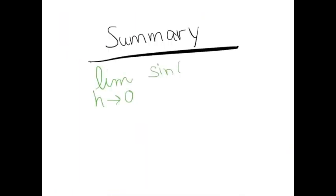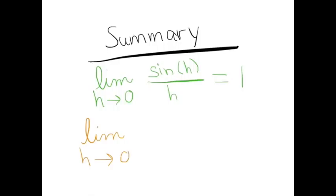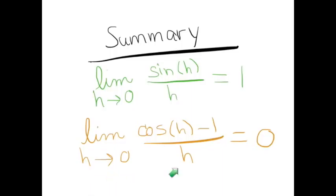Let's summarize. We showed that the limit as h goes to zero of sin(h)/h equals 1, and the limit as h goes to zero of (cos(h) − 1)/h equals 0. We're going to use these two limits to take the derivative of the cosine function using the limit definition of derivative.